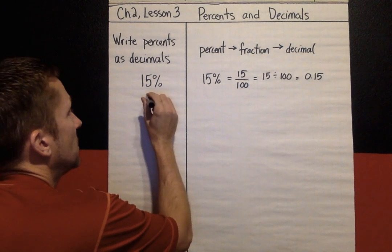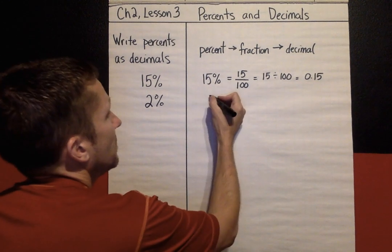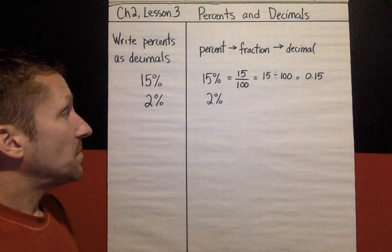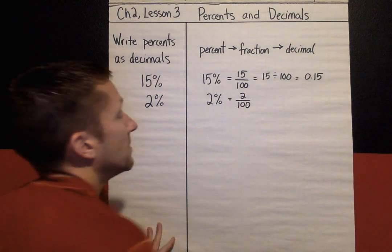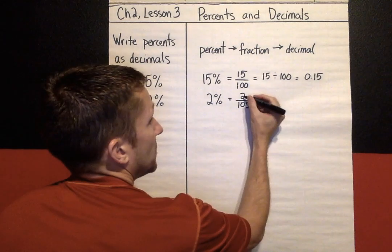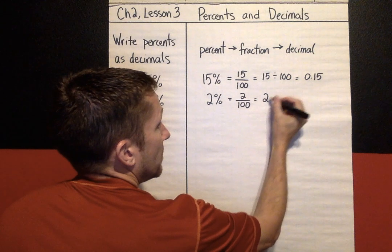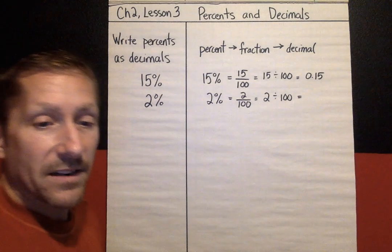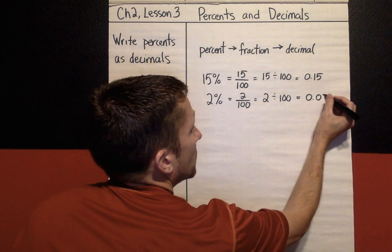Let's do another one: 2 percent. Percent always means out of 100, so 2 out of 100 as a fraction. Any fraction — to change it into a decimal — is numerator divided by denominator: 2 divided by 100. Type that into your calculator and you are going to get 0.02.